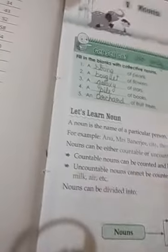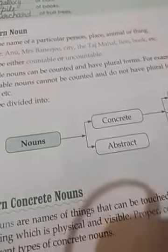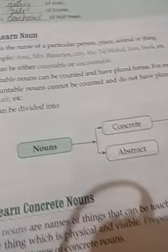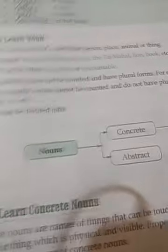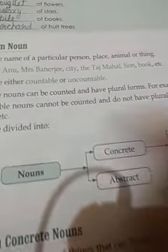Countable nouns can be counted and have a plural form. Uncountable nouns can't be counted and don't have a plural form.